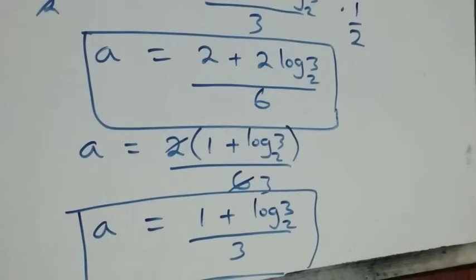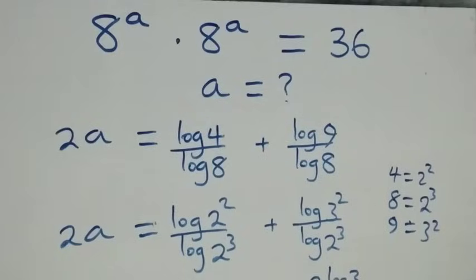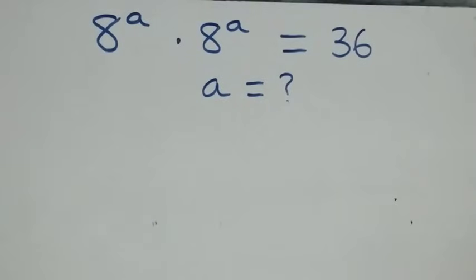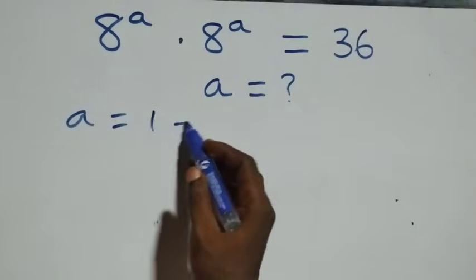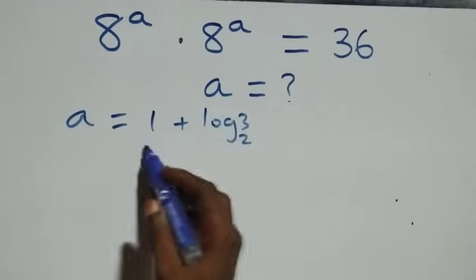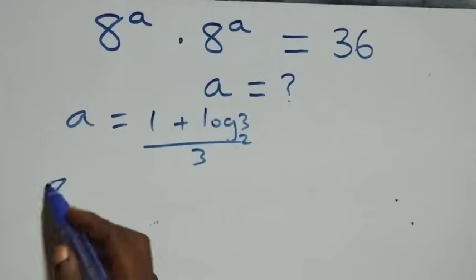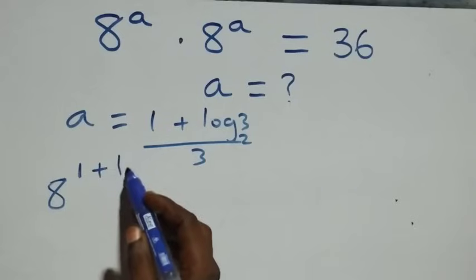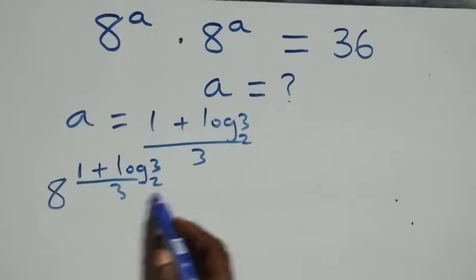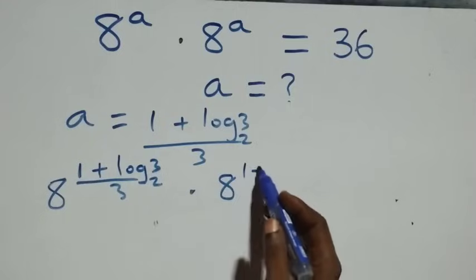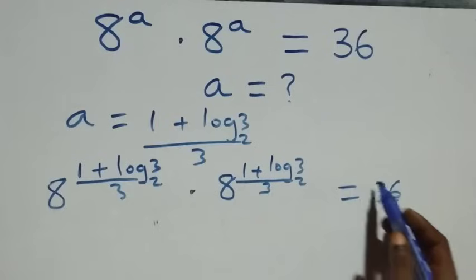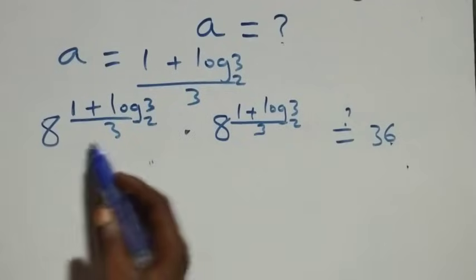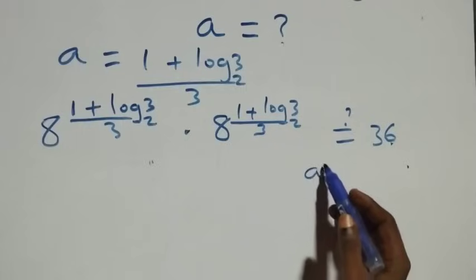So the value of a is 1 plus log 3 base 2, all over 3. Now let's check if this satisfies the given problem. We substitute the value of a back into the equation: 8 raised to the power of (1 plus log 3 base 2 over 3) times 8 raised to the power of (1 plus log 3 base 2 over 3). Is this equal to 36?